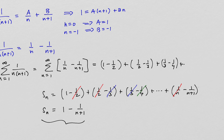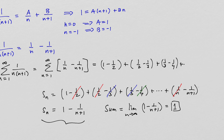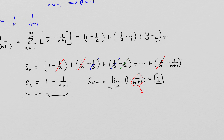Now we have a formula for the nth partial sum. The sum of the series is the limit as n goes to infinity of 1 minus 1 over n+1, which is clearly equal to 1, since 1/(n+1) goes to 0. This type of series has a special name — it's called a telescoping sum — because these terms cancel out and the series collapses like an old telescope.